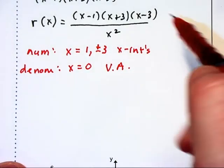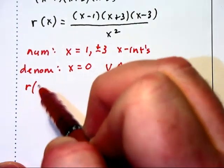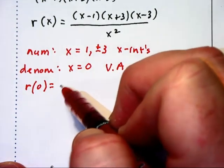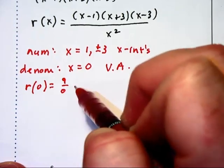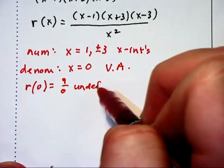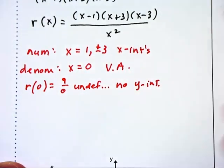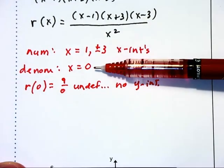Then we substitute 0 into the function, and r of 0, when you substitute that in, we divide by 0, so we're going to get 9 over 0, which is undefined. And that basically means there will be no y-intercept, which is consistent with the vertical asymptote at x equals 0.